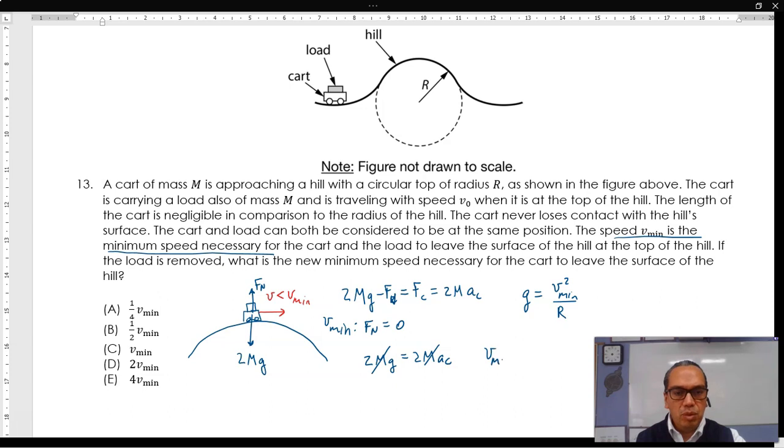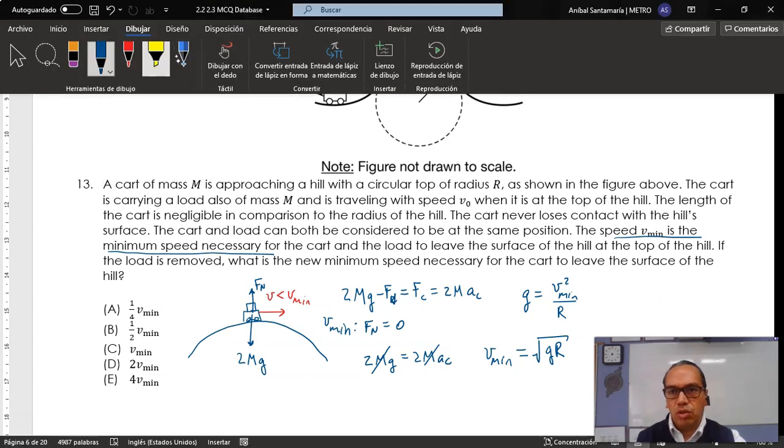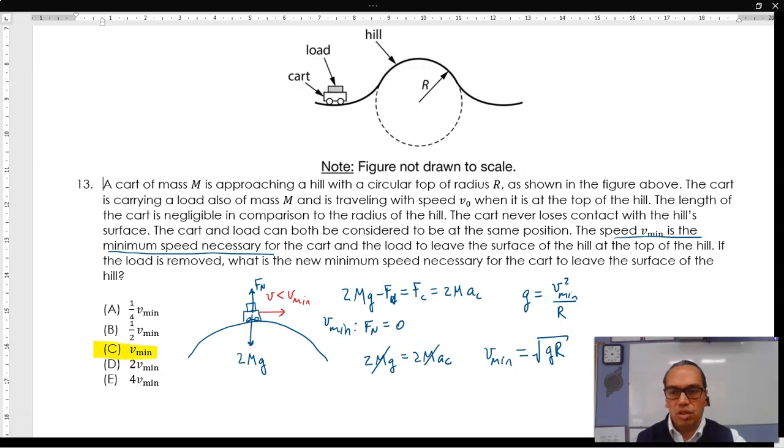Therefore, the minimum speed for the cart to leave the curve, whether it has a load or not, is square root of gr. Now, since this is independent of having two times the mass m, or one times the mass m, then your answer should be exactly the same speed, and so this is answer c.